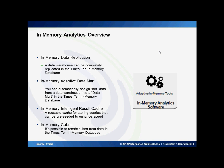Which brings us to the in-memory intelligent result cache. This result cache is a reusable cache for storing queries that can be pre-seeded to enhance speed. The system can automatically figure out what data is used most of the time and keep that in a cache, making it much faster to perform those queries over and over again.